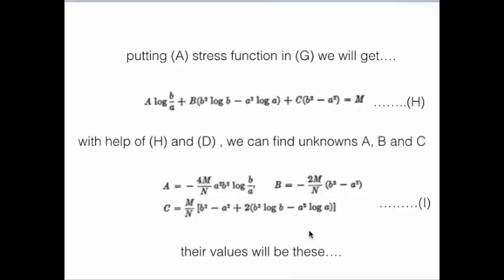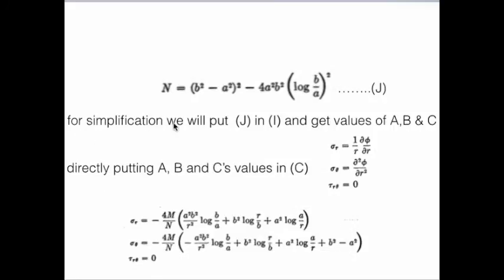So their values will be coming like this. You can do all the operations and get these values. So here: A = -4M/N × a²b² log(b/a). B = -2M/N × (b² - a²). C = M/N × (b² - a² + 2(b² log b - a² log a)). You will wonder why this N is coming. This N is just for simplifying the equation. The N's value is b² - a² - 4a²b² log(b/a). It's kind of tedious, so we just put N instead of all these terms. That's why we are putting it for simplification.